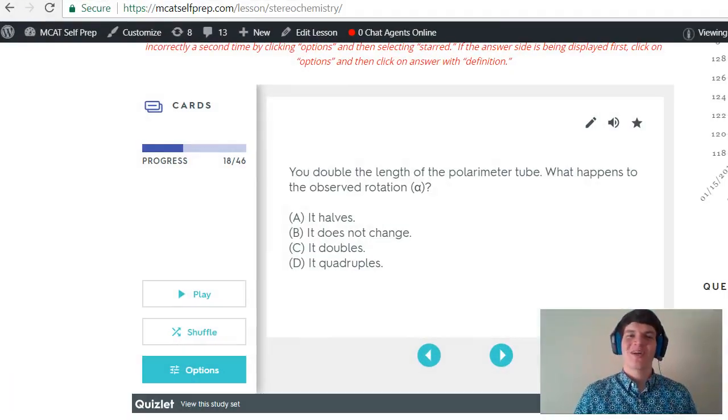Let's take a second look at the question stem. You double the length of the polarimeter tube. What happens to the observed rotation? Now please avoid the temptation to write out that equation over again. You don't even need to think about the equation. All you need to think about is the principles behind it. If I double the length of the tube, that means there's twice as much time for that light to be rotated by the chiral substance. Therefore, it will rotate twice as far. Thus the observed rotation must double, making answer choice C the correct answer.